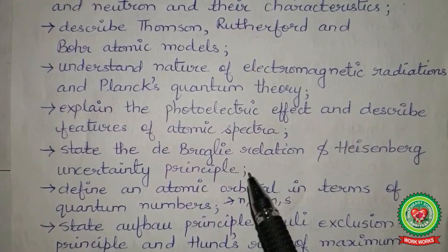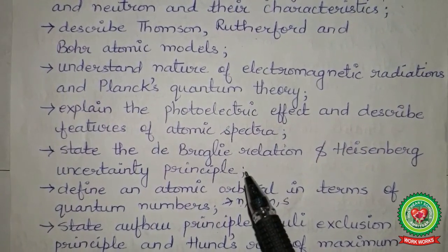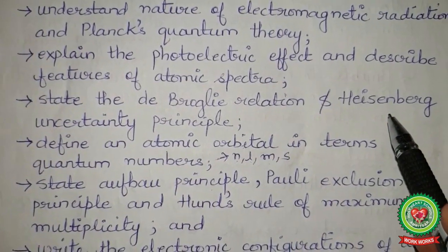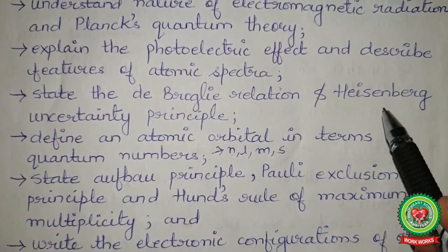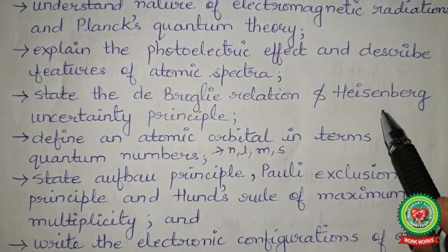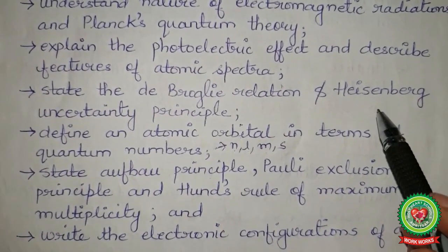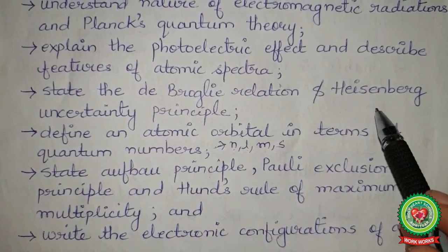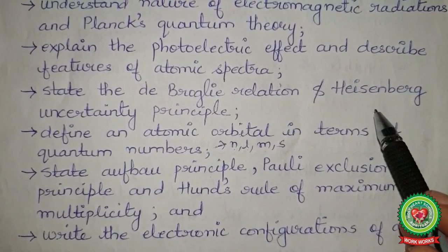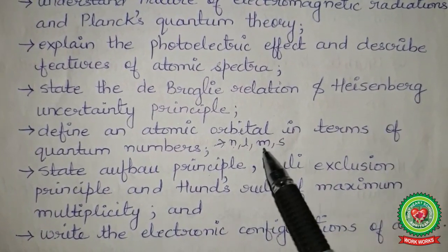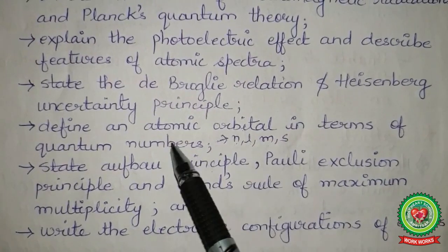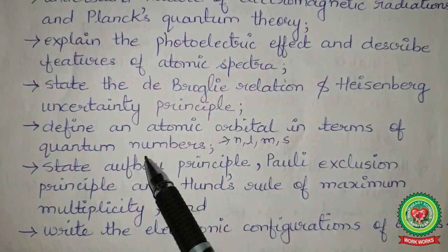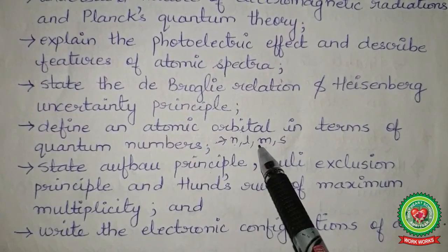We then covered Heisenberg's uncertainty principle: it is impossible to measure simultaneously the exact position and exact momentum of a body as small as an electron — at a time you can measure only one. In today's lecture, we are going to define atomic orbitals, study quantum numbers and their types, and learn how to write electronic configurations.